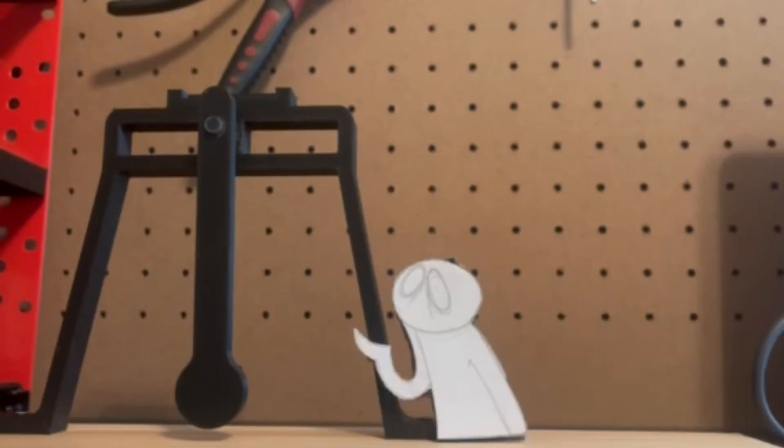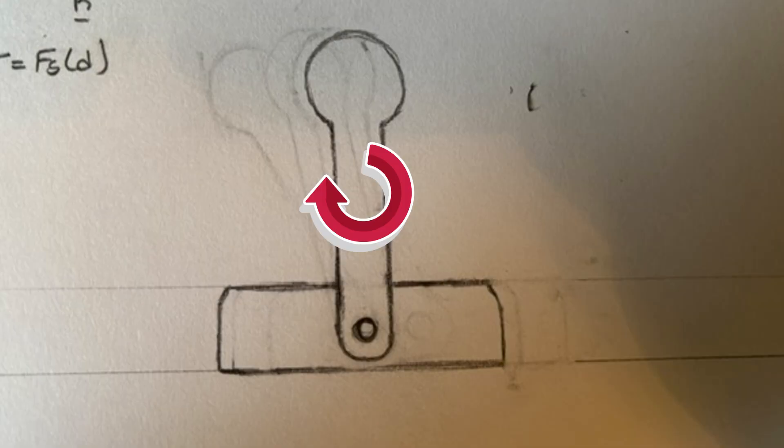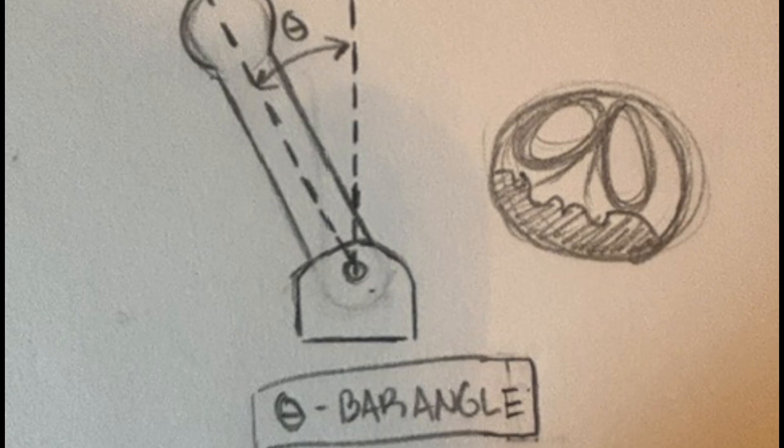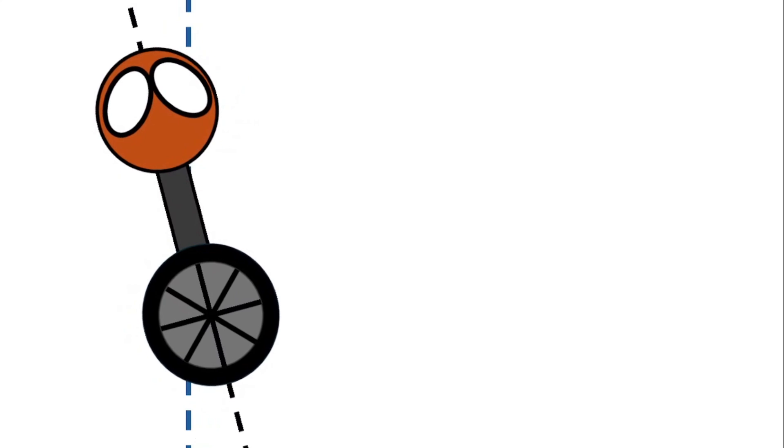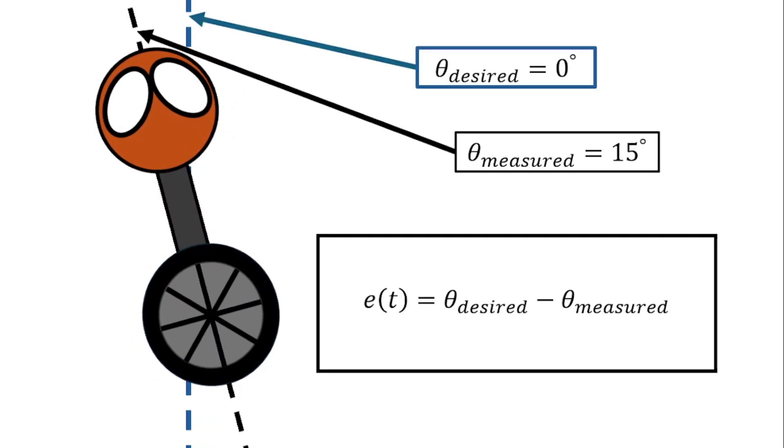Now we need some active control system that can determine whether the pendulum is vertical or not and is falling down, so that we can move the pivot to be right under the center of mass of the bar to keep it stabilized. In other words, we need to measure the orientation of the bar. We can do this by measuring the angle of the bar and comparing it to the desired angle, which in this case is probably going to be around zero because we don't want it to move.